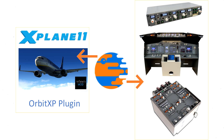For example, if we press a button of the forward overhead, Orbit will notify X-Plane of which specific button we pushed, and then X-Plane will do what it has to do accordingly. And that's mainly the reason why we need Orbit — to send information back and forth so X-Plane 11 can be used with our SISMO simulator.